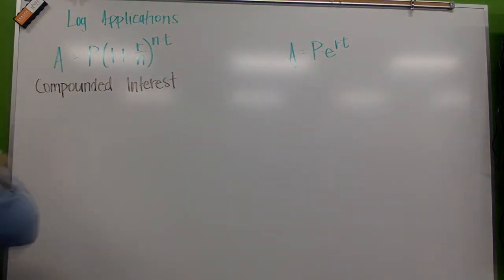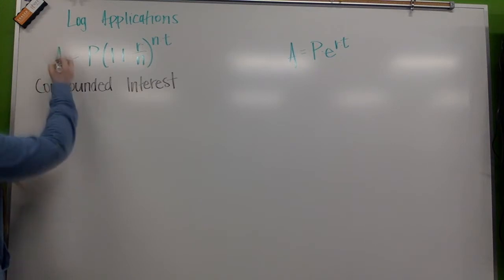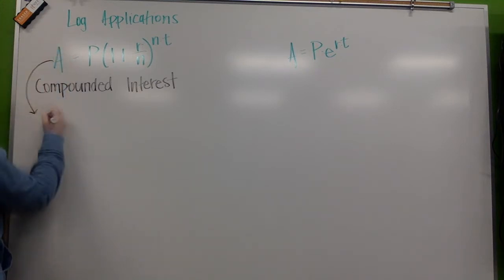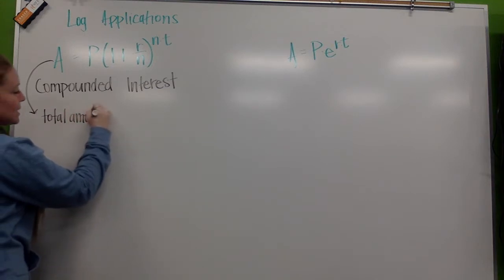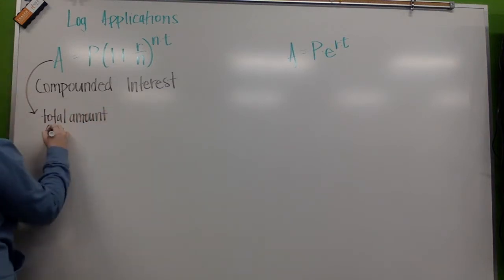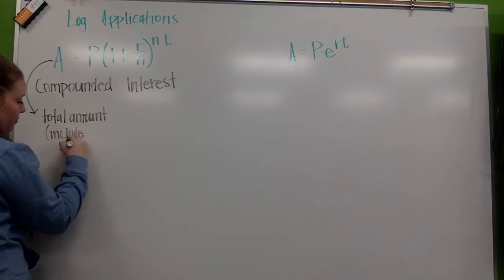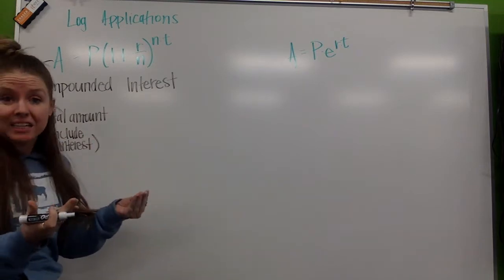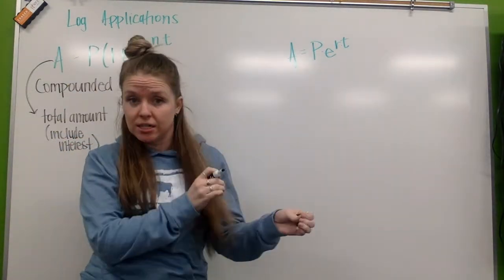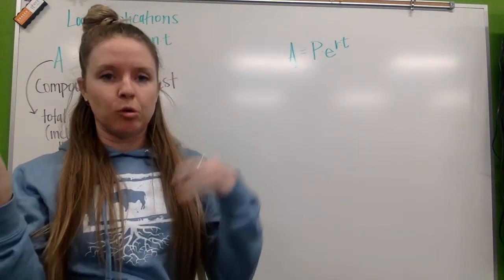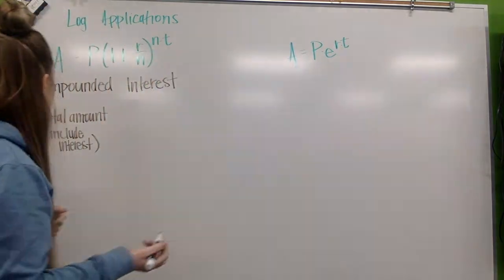Let's just talk about these variables here. A, this is for your total amount. What this is, is it's going to take your starting amount and it's going to include the interest. So, this is the final amount, principal plus interest. This isn't going to tell you just the interest. It's going to tell you the principal plus interest.